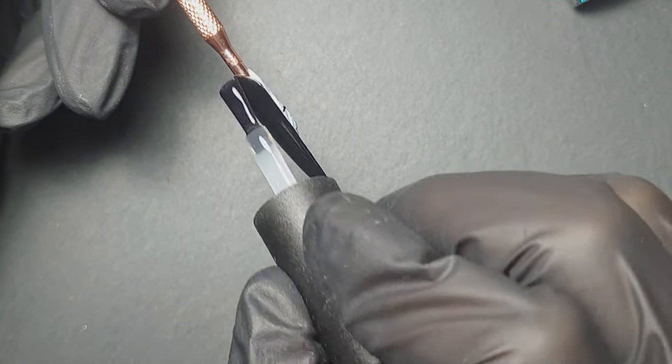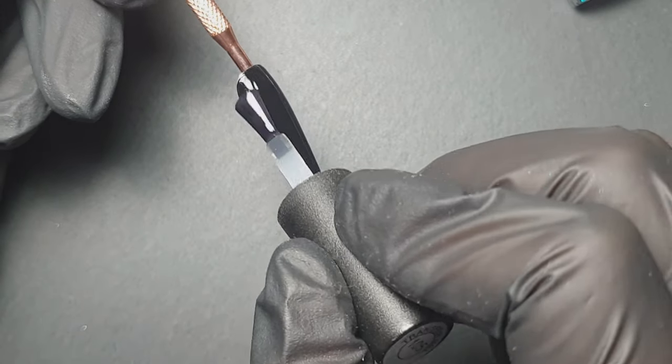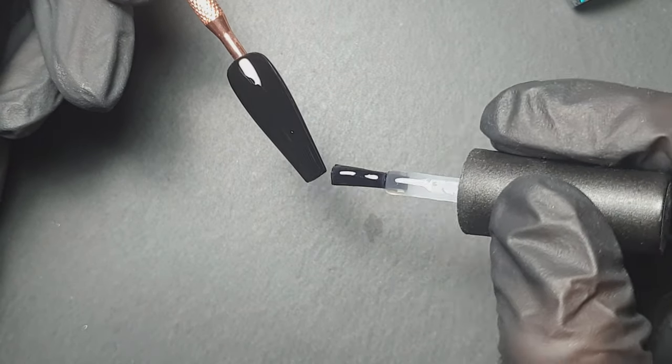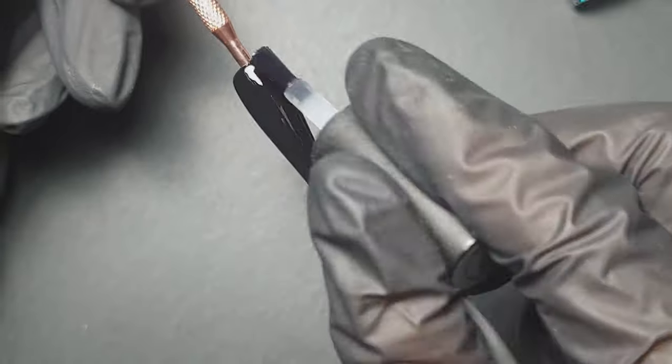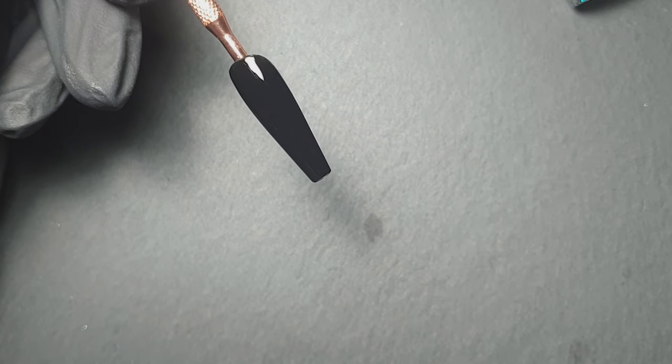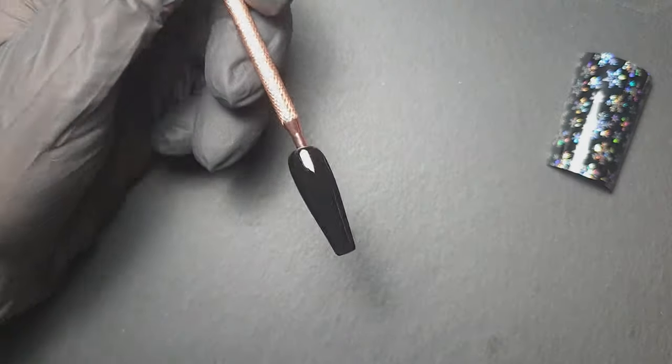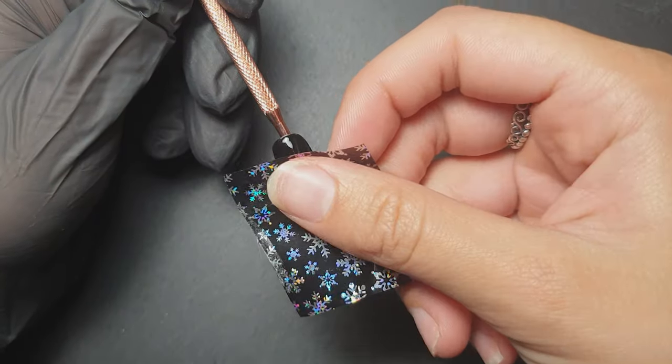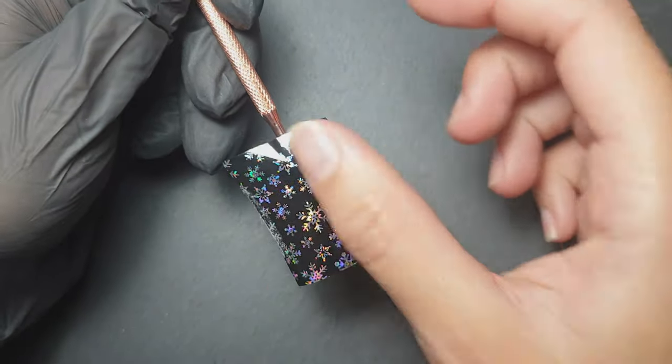Once that's cured I'm going to pop a layer of transfer foil gel over the top of that. This is just a cheap one from eBay so it's not amazing - there's a lot better ones out there, but this was all I had. Then I'm going to cure that in my LED lamp for 30 seconds.